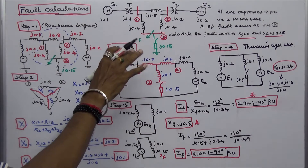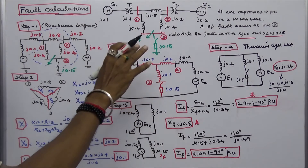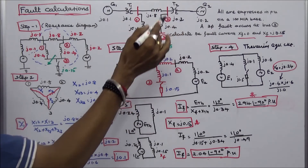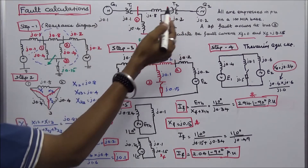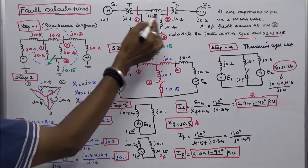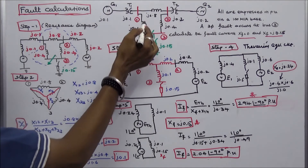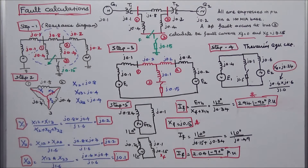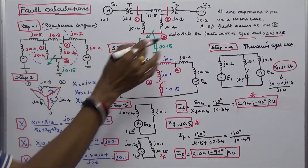In this class we work out one problem on Symmetrical Fault Calculation using Thevenin's Theorem. This is the given network. This network consists of 2 generators, 2 transformers, 3 buses 1, 2, 3. The 3 branch impedances given are J.8, J.4, and J.4. All are expressed in per unit on 100 MVA base.